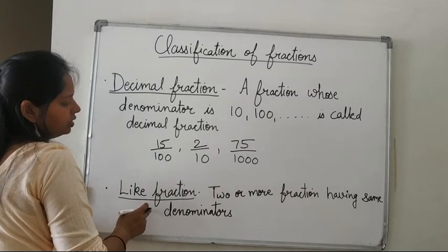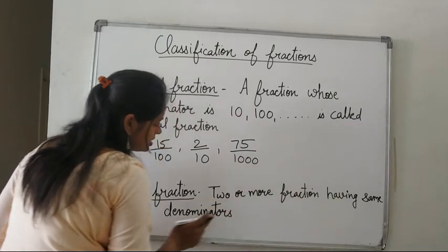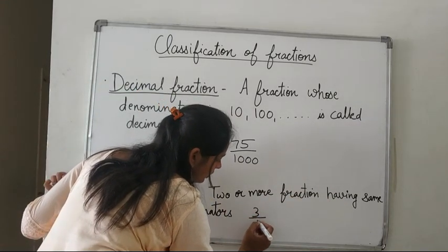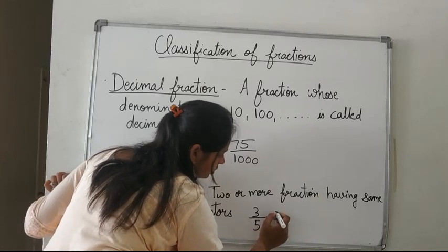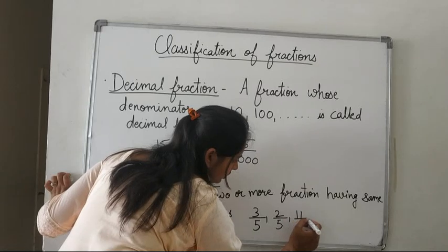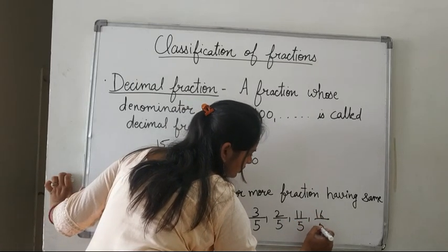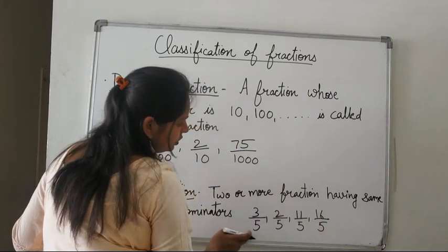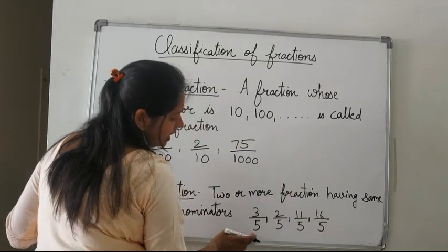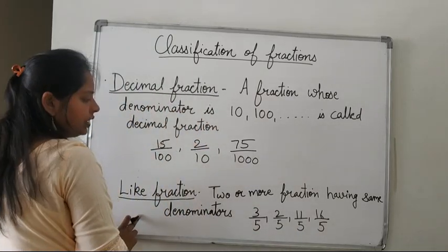Next is like fractions — two or more fractions having the same denominator. For example, 3 upon 5, 2 upon 5, 11 upon 5, and 16 upon 5. All these fractions have the denominator 5, so they are all like fractions.